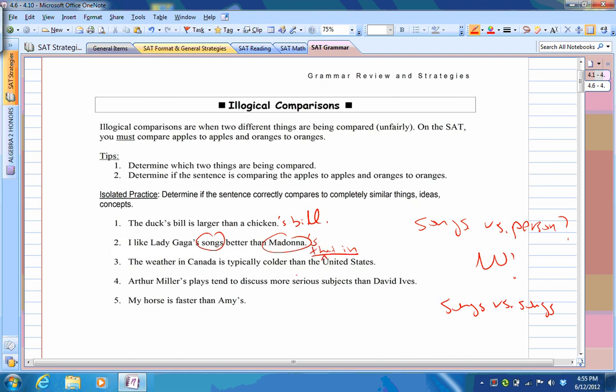Let's look at number four. Arthur Miller's plays tend to discuss more serious subjects than David Ives' plays. And applying for number five, my horse is faster than Amy's. In that case, that would be alright. Because if you really want to compare a horse to Amy, then of course we have a problem. But I'm pretty sure you want to compare a horse to horse, so five is okay. So that's correct.